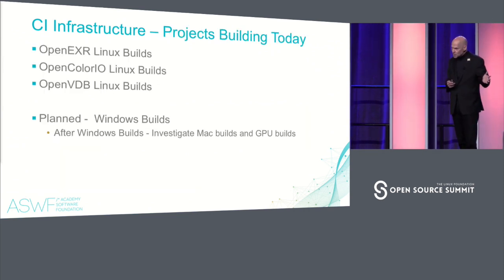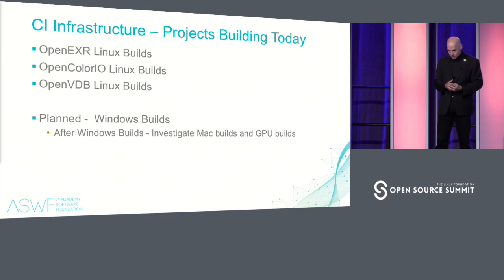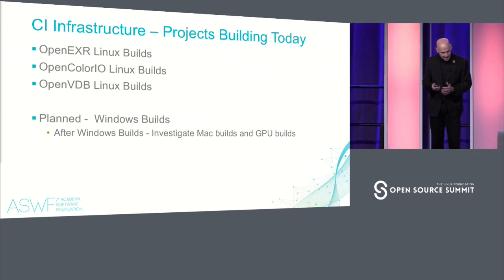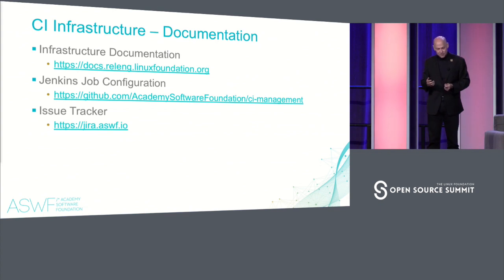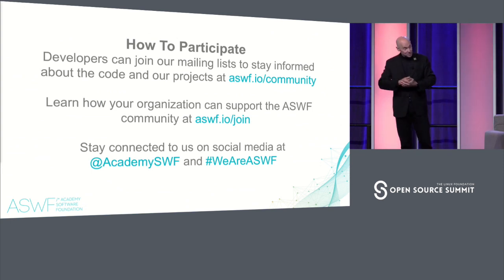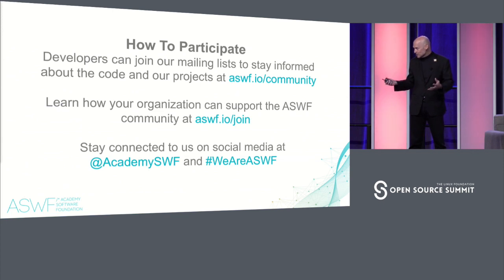We have three projects tested on the CI infrastructure right now: OpenEXR, which is a library dealing with high dynamic range images that has existed in production for a long time; OpenColorIO, which deals with color management within a production pipeline; and OpenVDB, which deals with deep image data for doing simulation, explosions, and things like that. We're also working on the Windows build. Information on our infrastructure is available for anyone who wants to check it out.